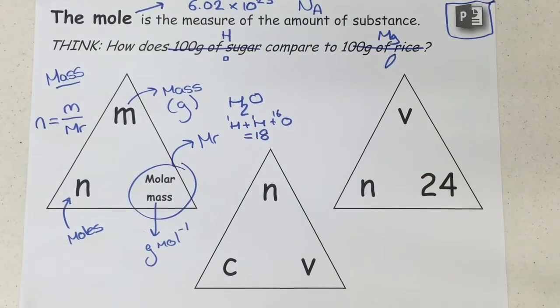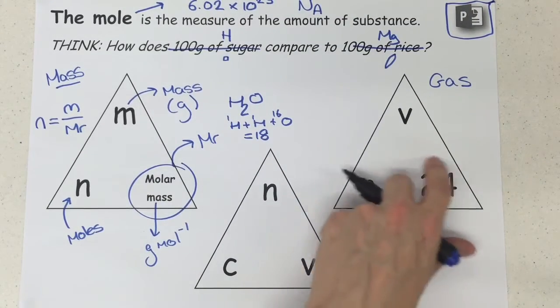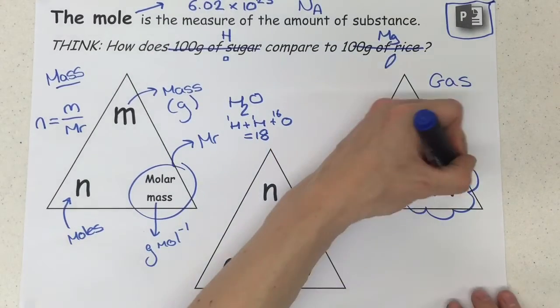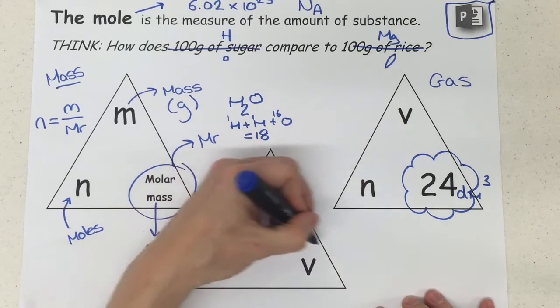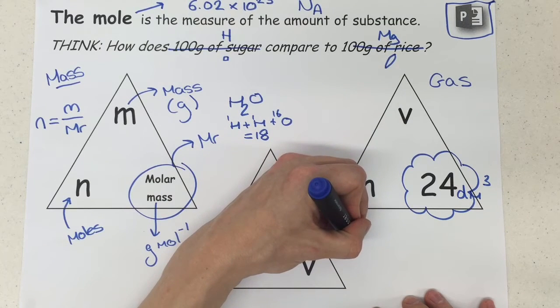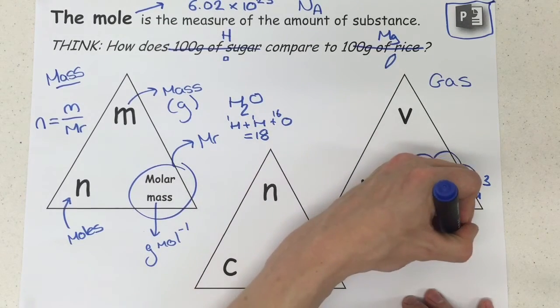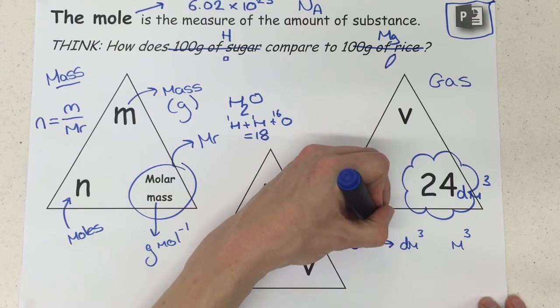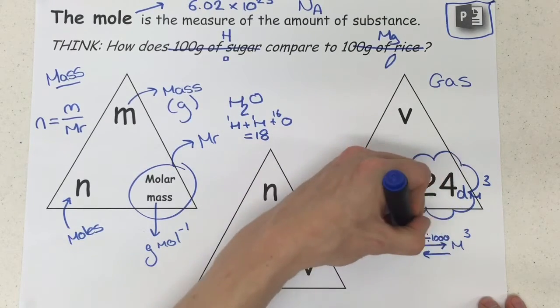The next one just over here on the right-hand side, this is referred to by us as the gas triangle. Now, the gas triangle has got this unusual 24 in there. And the reason it has this is because one mole of any gas will occupy 24 decimetres cubed. This is potentially the first time you've looked at decimetres cubed as a quantity. And you need to be aware, especially for the next triangle as well, you need to be aware of how to convert between a centimetre cubed quantity to a decimetre cubed quantity to a metre cubed quantity. You have to know how to convert between all of these.